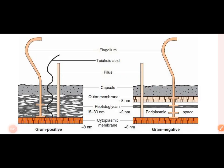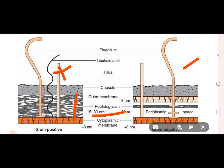We can compare gram positive and gram negative bacteria. In gram positive, the peptidoglycan layer is thick. In gram negative, the peptidoglycan is very thin, and there is a beta-lactamase enzyme and a layer of lipopolysaccharides. The difference between these two is that teichoic acids are present in gram positive and absent in gram negative.